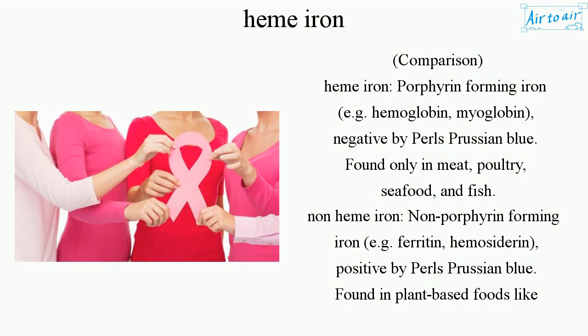Comparison. Heme iron: porphyrin-forming iron. Examples include hemoglobin and myoglobin. Negative by Pearls Prussian blue stain. Found only in meat, poultry, seafood, and fish.